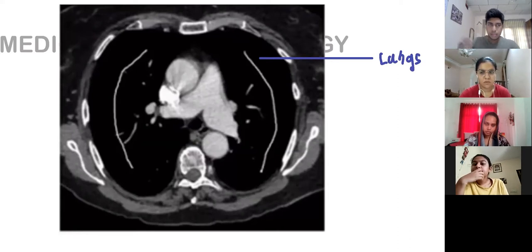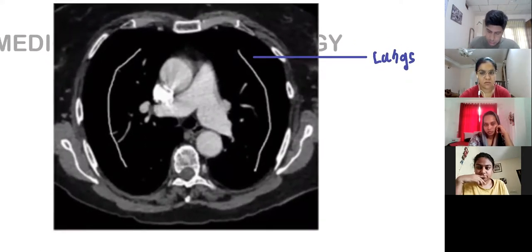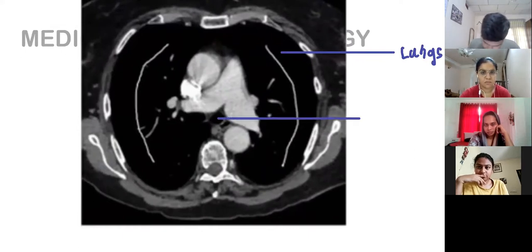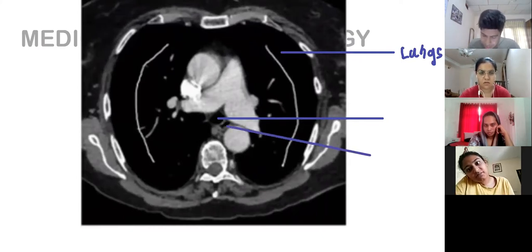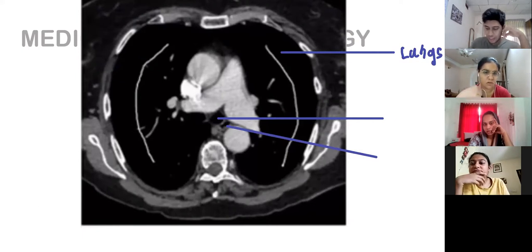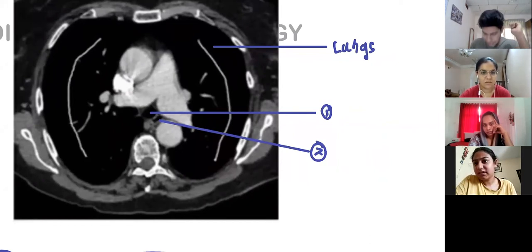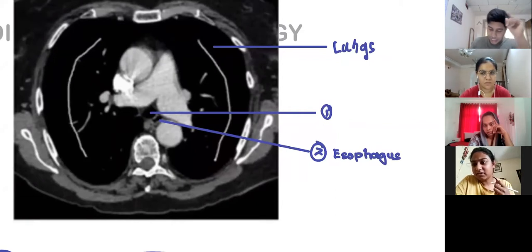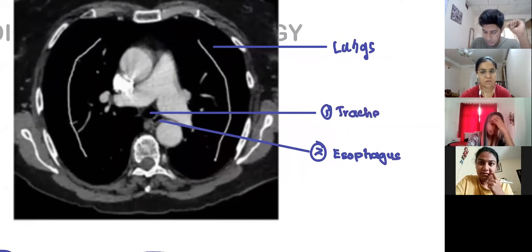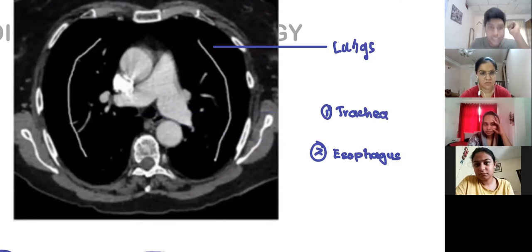The first anatomy class will be on the eighth - it'll be a free class you guys can come. What do you think this structure is? There are two hollow structures - one is the trachea, the other is the esophagus. Label the esophagus: which is the esophagus? Two is the esophagus, one is the trachea. The reason: the esophagus is behind the trachea, and the trachea is made out of cartilage so it won't be compressed. You can see this structure has been compressed - that's the esophagus.